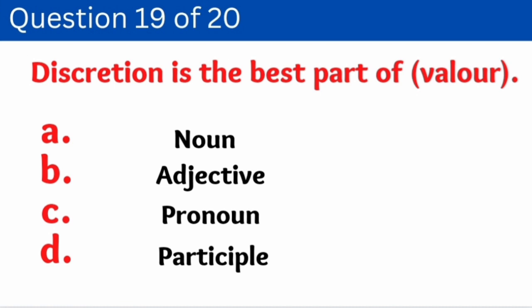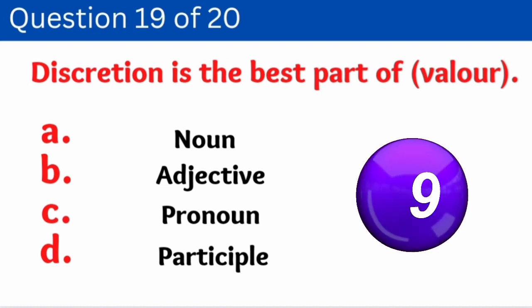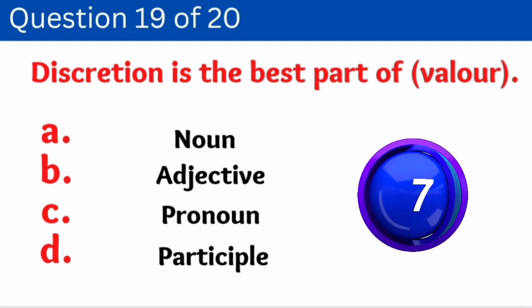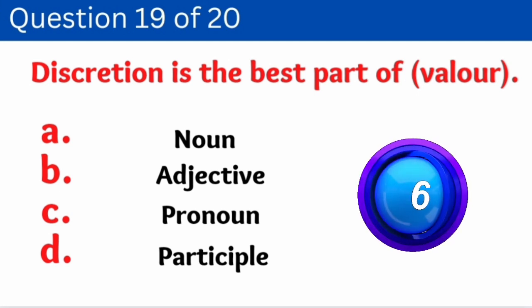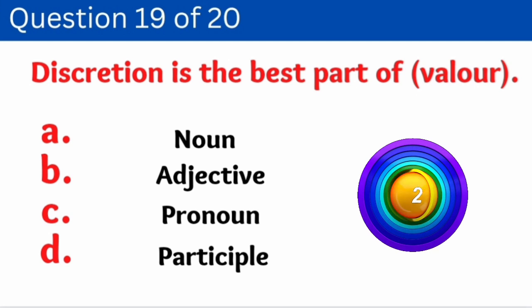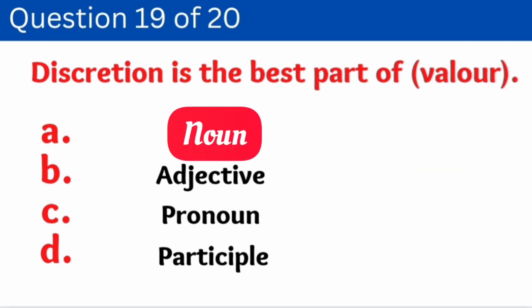Question number nineteen: 'Discretion is the best part of valor.' Here we have to identify how 'valor' is used. Options: A. Noun, B. Adjective, C. Pronoun, D. Participle. And the correct answer is option A — Noun.